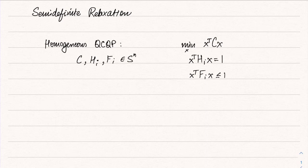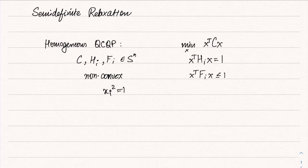Our goal is to find the solution of this problem. This is non-convex — it does not have hidden convexity, it is a really difficult problem. In fact, a large class of NP-hard problems are also included in this. For example, the constraint x_i^2 = 1 can be written in this form, which means x_i is either −1 or +1 — an integer constraint. So this homogeneous QCQP actually includes all sorts of integer programs as well.